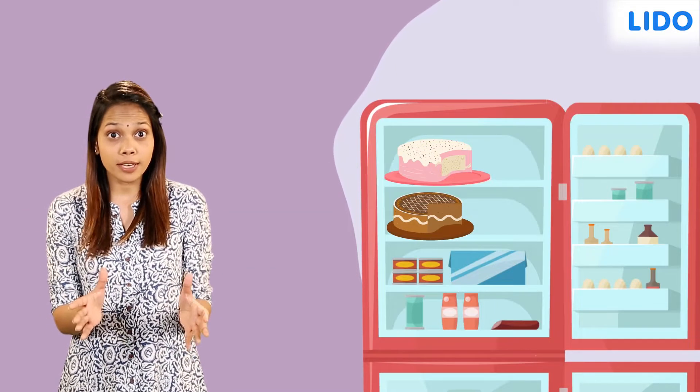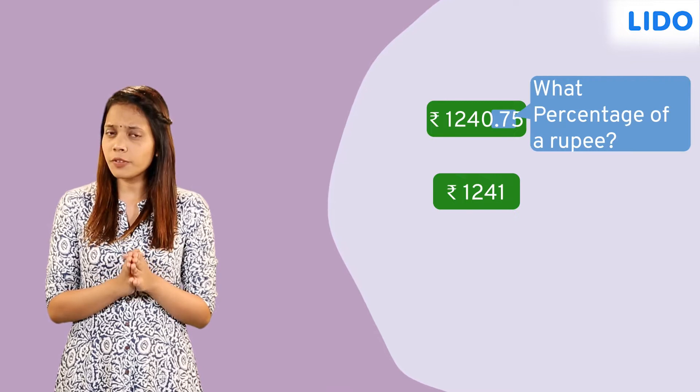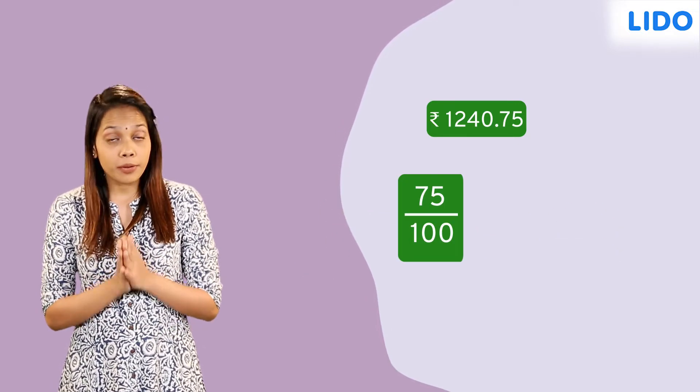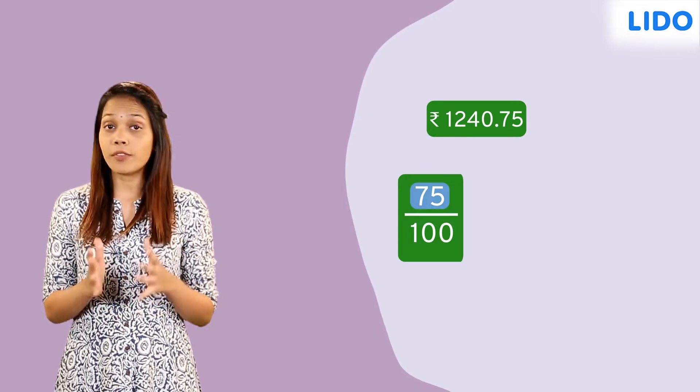Let me store them in the refrigerator. I remember the 2 cakes cost 1,240 rupees and 75 paise. But I paid only 1,241 rupees because I did not have change. I wonder 75 paise is what percent of a rupee? We know that 1 rupee is equal to 100 paise, and 75 out of 100 paise can be written as 75 over 100.